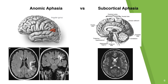Looking at the brain scan, the lesion for anomic aphasia is more superior and located in the temporal parietal region. Moving on to subcortical aphasia — specifically thalamic subcortical — the lesion occurs in the thalamus and is more inferior and medial. Through imaging, that is the main way you can tell the difference between the two aphasias.